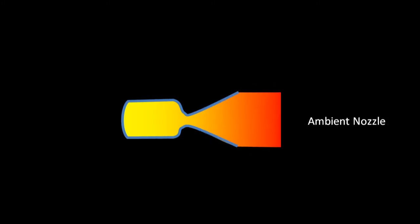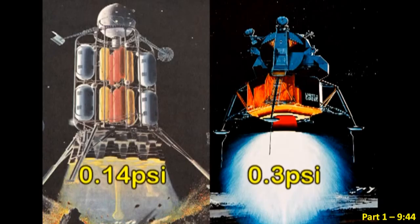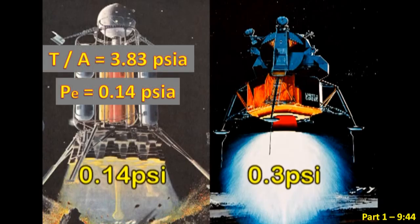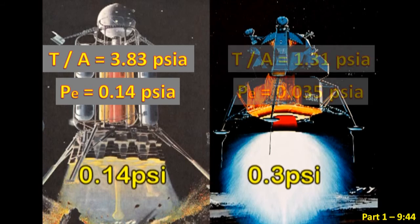By changing the geometry of the nozzle, you can change the power output of the rocket engine. So, Von Braun's 1953 concept rocket had 3.83 PSI total pressure and 0.14 PSI static pressure compared to the lunar module descent engine that had 1.31 PSI total pressure and 0.035 PSI static pressure at 30% throttle.